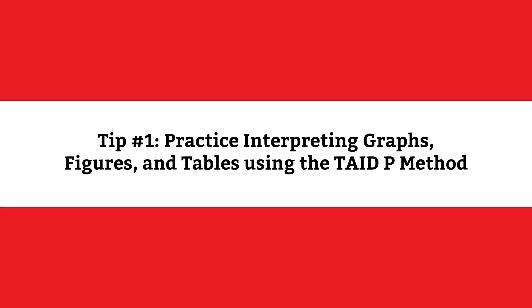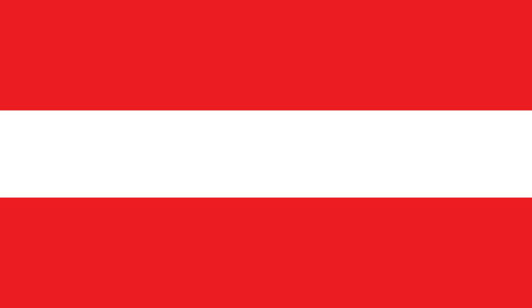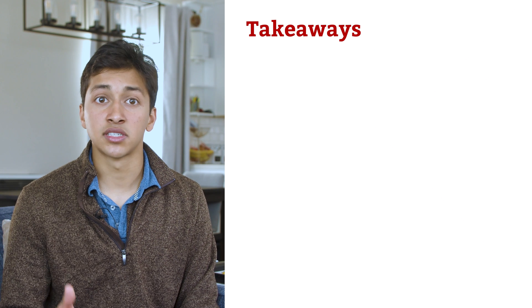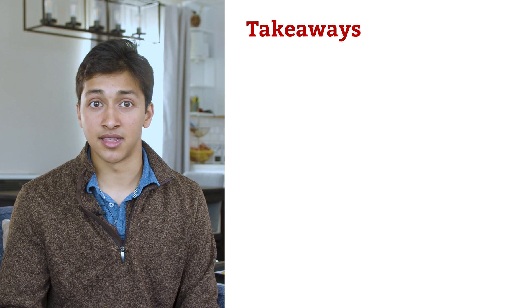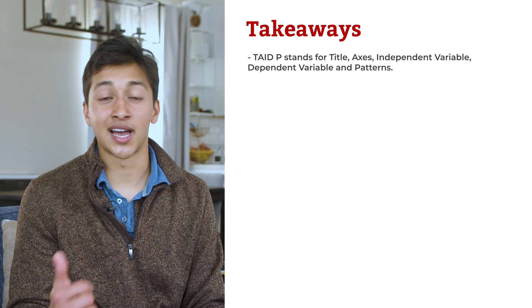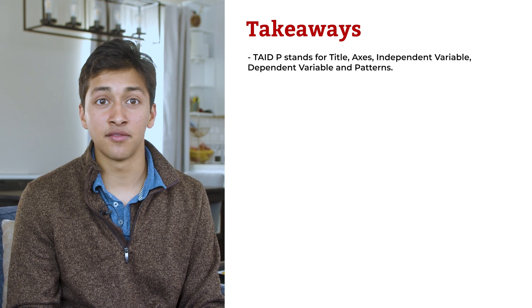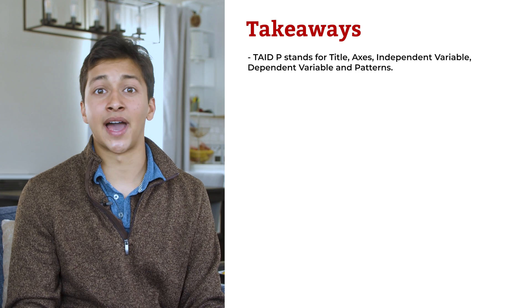Now that you know what you are going to be tested on, let's go over tips and study strategies you can use to score a 132 on the biology and biochemistry section. MCAT biology biochemistry tip number 1: Practice interpreting graphs, figures, and tables using the TAIDP method. TAIDP stands for title, axes, independent variable, dependent variable, and patterns.